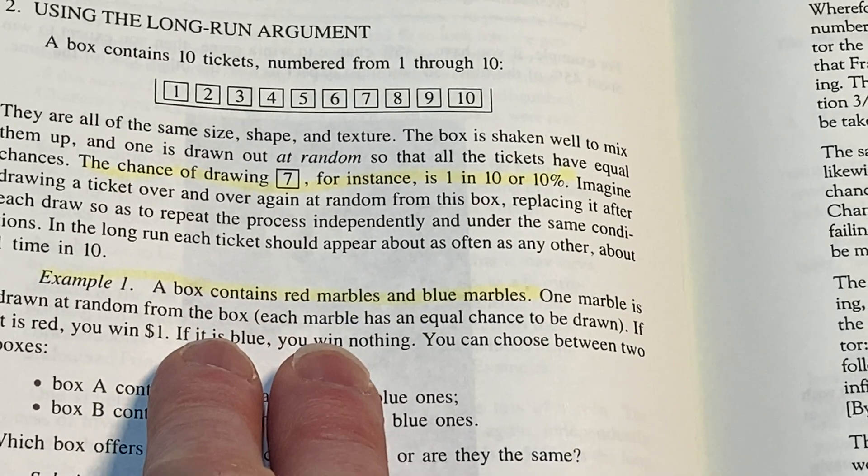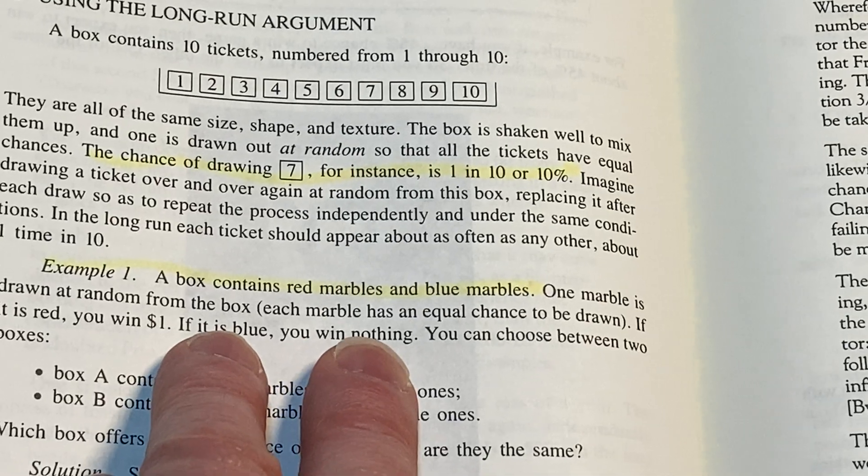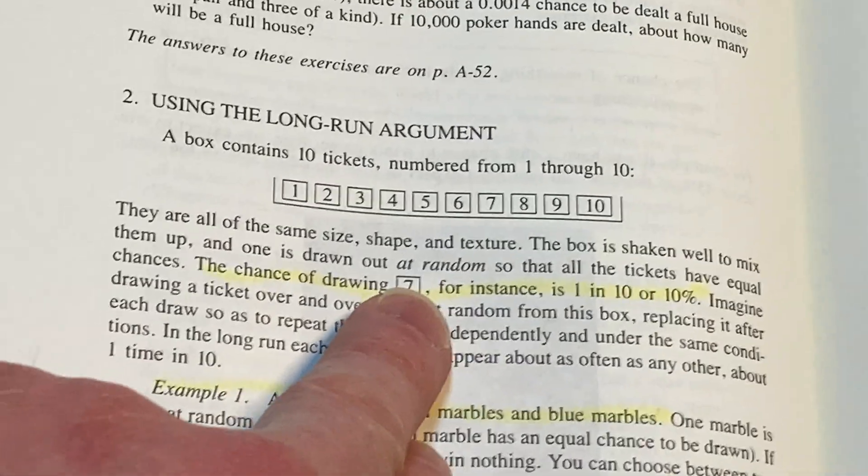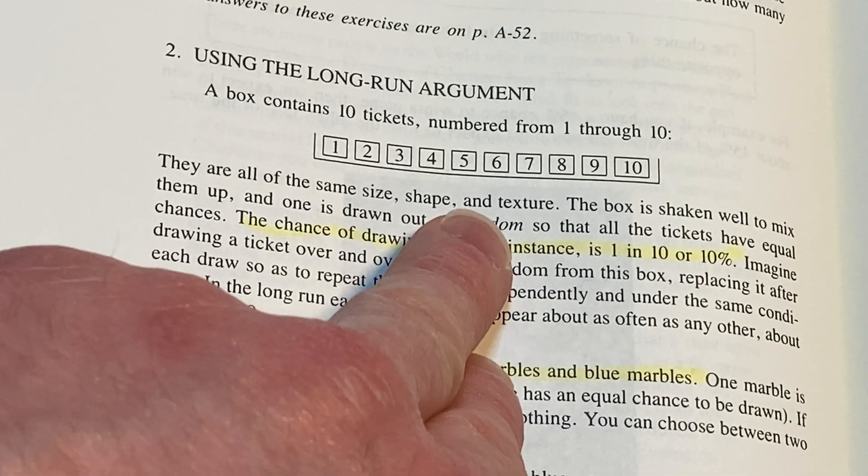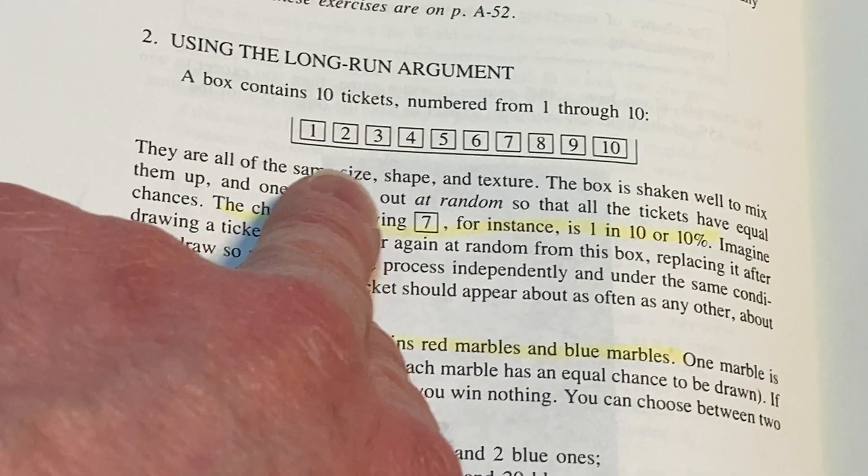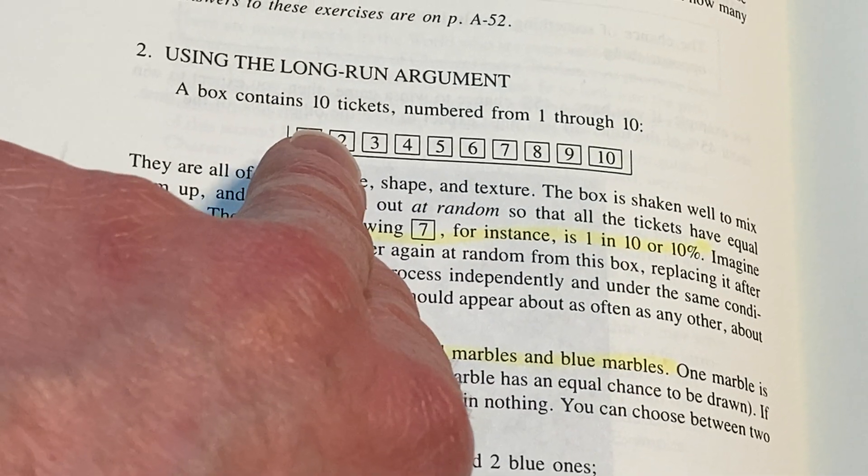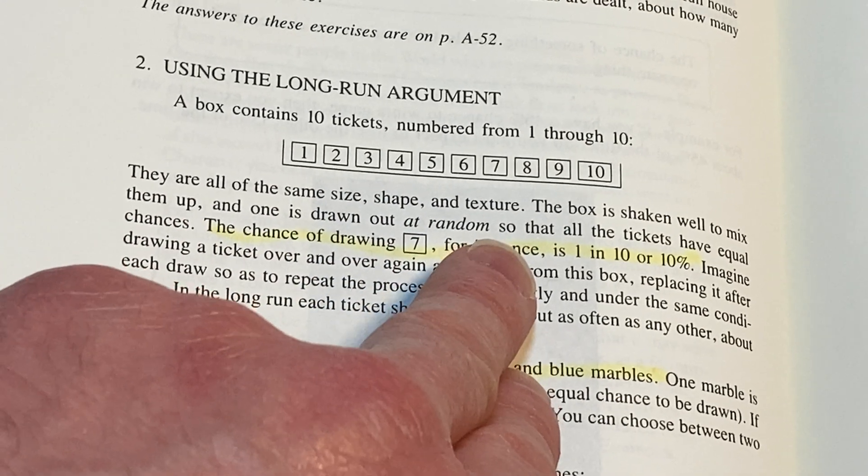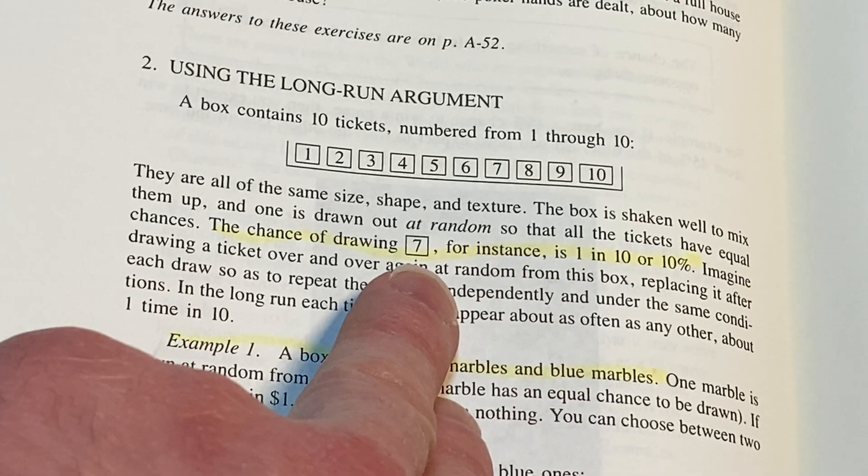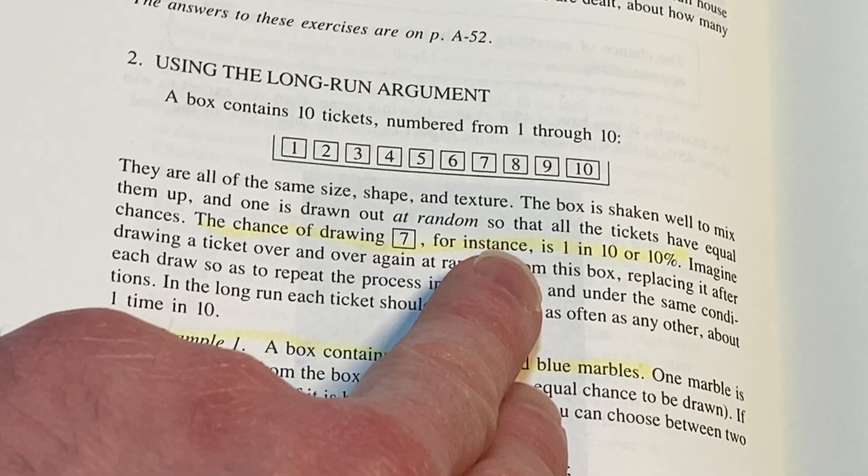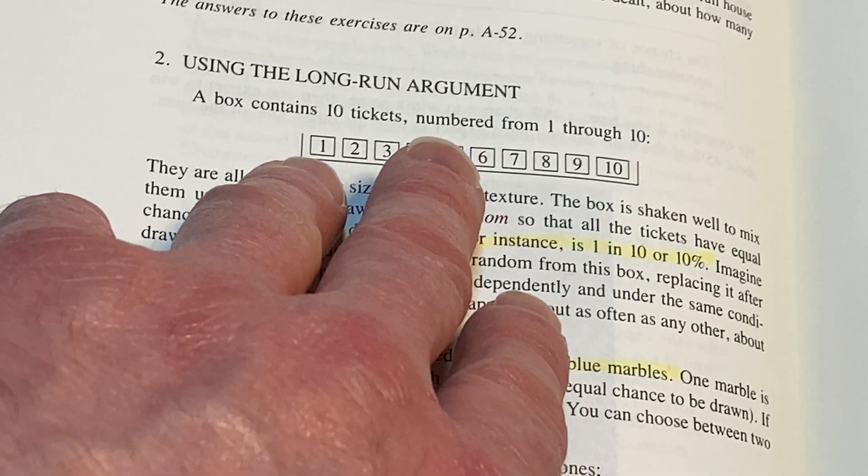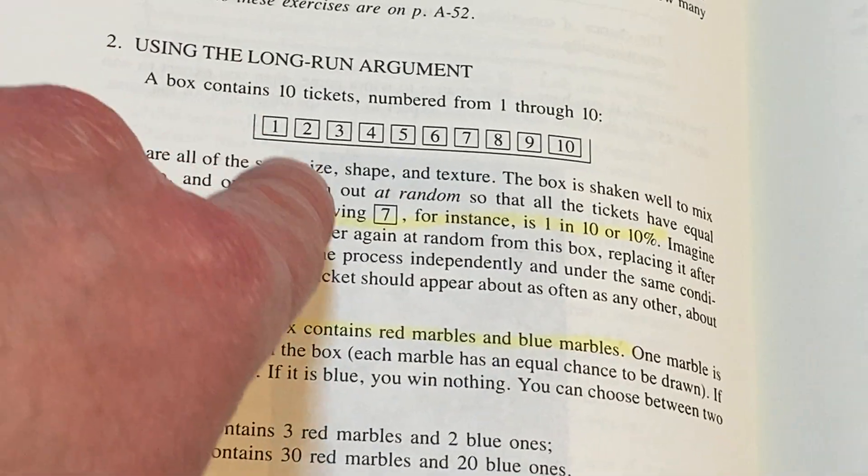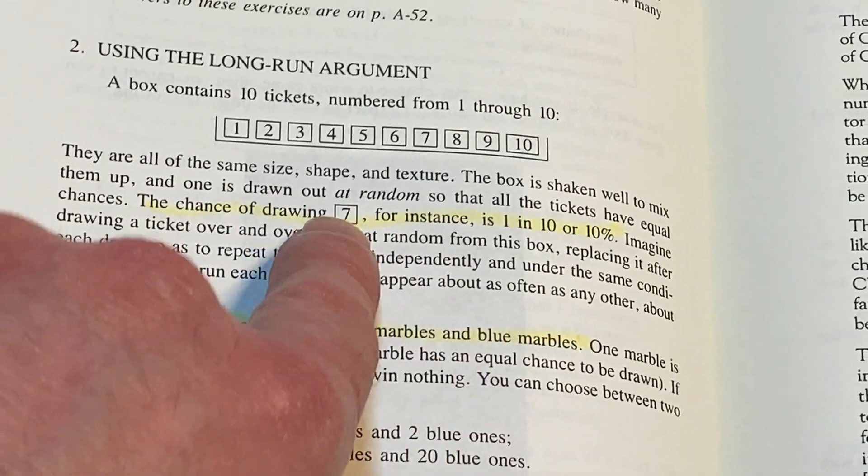Example 1. A box contains red marbles and blue marbles. One marble is drawn at random from the box. Yeah. By the way, that's a really good example. That's a really good example because let's think about this. You have 10 tickets numbered 1 through 10. And if you get one, let's say you get a 7 right away. You might say, well, I thought the chance was 1 in 10. Yeah, you got lucky. You can get a 7 every time, 10 times in a row.